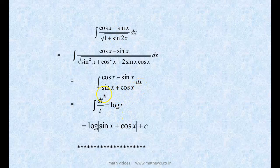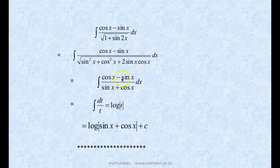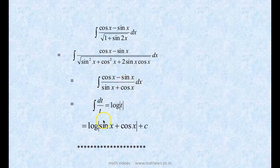We substitute t = sin x + cos x. The derivative is cos x - sin x dx = dt. So the integral reduces to integral of dt/t = log|t|. Therefore the answer is log|sin x + cos x| + C.